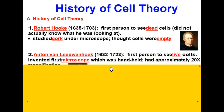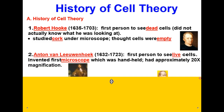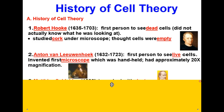Antoine von Leeuwenhoek was the next scientist to contribute to this discovery of cells, doing his work between 1632 and 1723. He was the first person to see live cells, and he invented the first microscope, which was handheld and had approximately a 20x magnification.